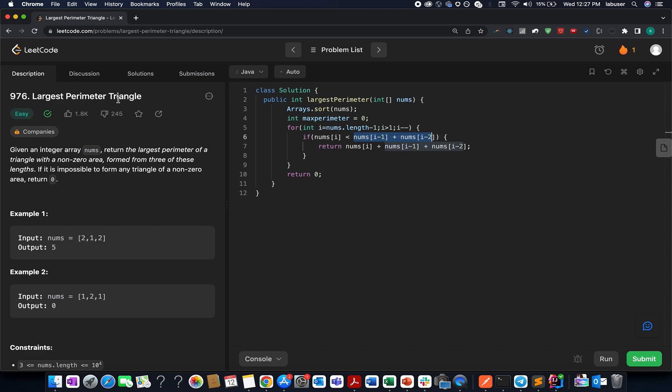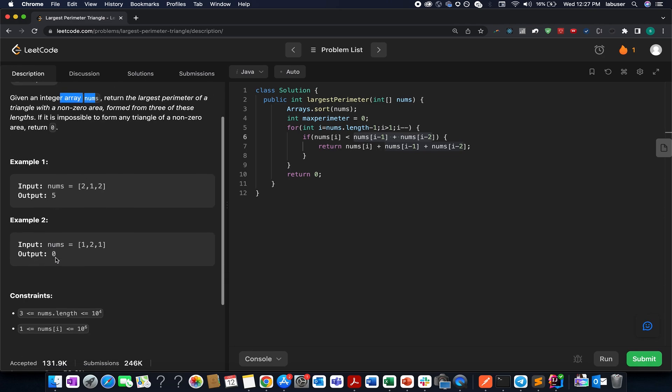The problem is Largest Perimeter Triangle. In this question you are given an array of numbers and you need to identify the largest perimeter of a triangle that has non-zero area that could be formed using the numbers present in the array. For example, here they have provided us with a few examples.